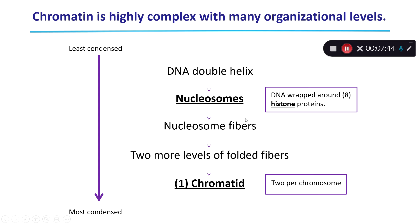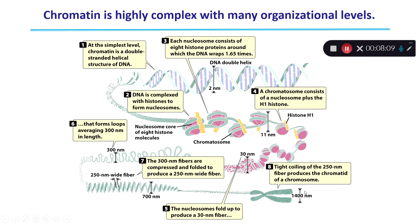Nucleosomes can then fold on themselves to form nucleosome fibers, and those fibers will continue to fold upon themselves, creating more and more condensed DNA until we end up with what's called a chromatid — which is one half of that X chromosome shape. There are two chromatids, called sister chromatids, per chromosome. Sister chromatids only form right before a cell is about to replicate, so keep that in mind as we move forward.